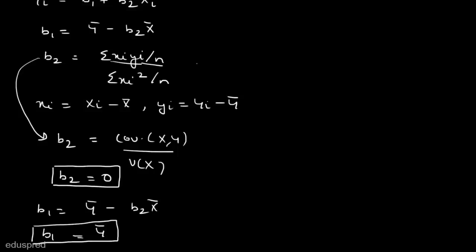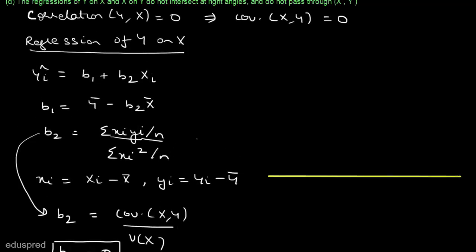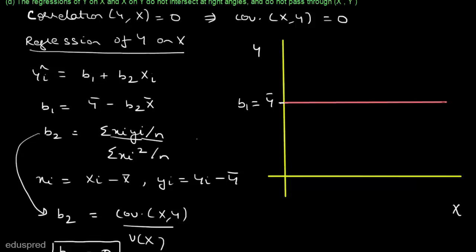Let's draw this line. With the horizontal axis representing x values and the vertical axis representing y values, when we regress y on x we get b1 = ȳ, which is the intercept, and b2 = 0, meaning the slope is zero. So the regression line is a horizontal line passing through ȳ.